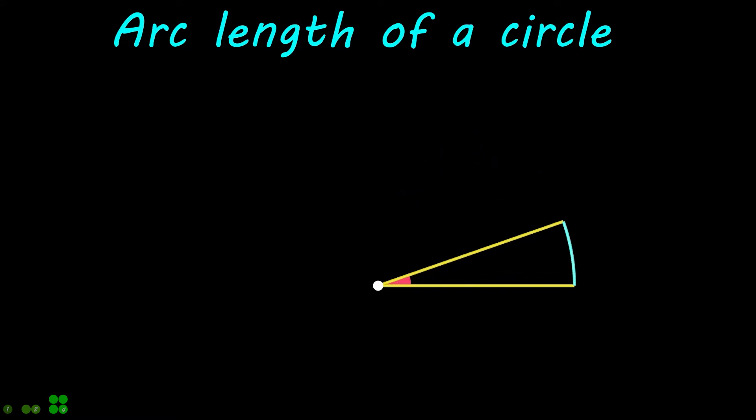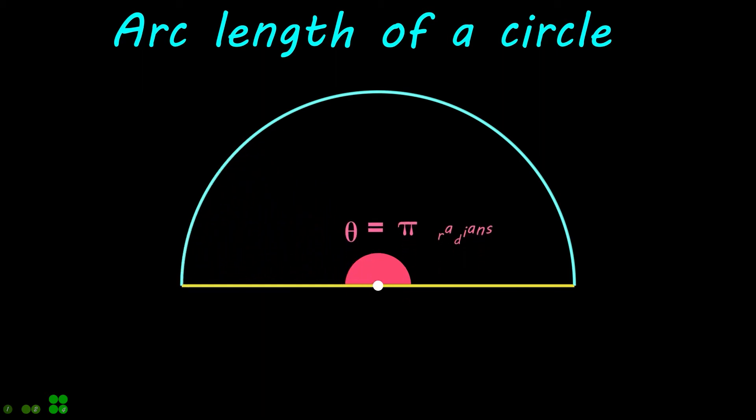For a semicircle, the angle theta is equal to pi radians. Therefore, the arc length in this case becomes radius times pi.